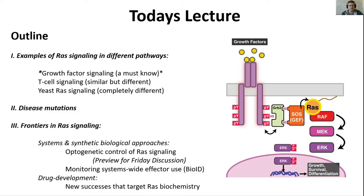I'm going to briefly talk about some systems and synthetic biological approaches to understand RAS signaling. I'll briefly talk about optogenetic control of RAS signaling, which is a preview for the paper chosen for Friday's discussion section. I'll also talk about ways people are starting to look in a big-picture way at how different effectors in cells are being used by RAS, and about advances in drug development — basically, ways people are trying to find ways to specifically target oncogenic alleles of RAS with small molecule drugs.